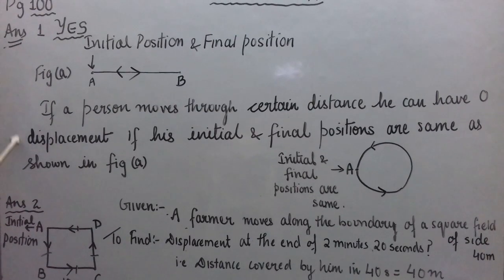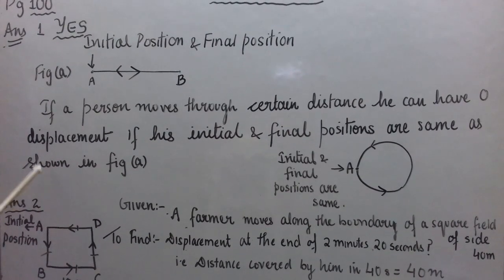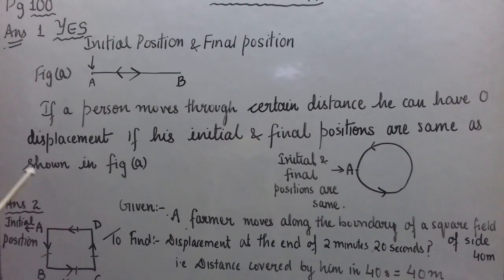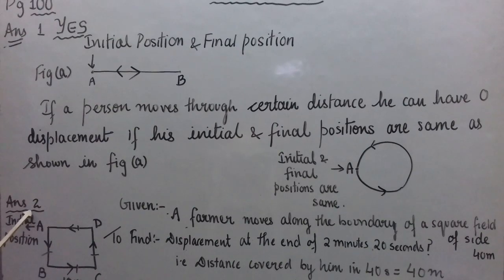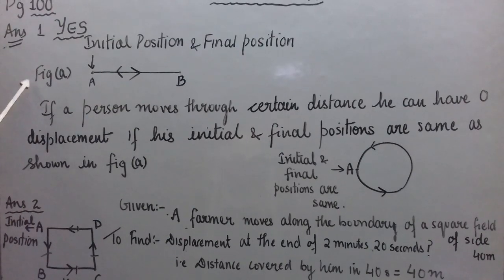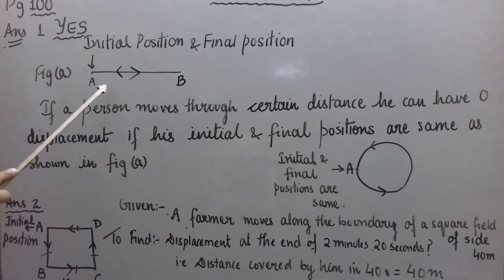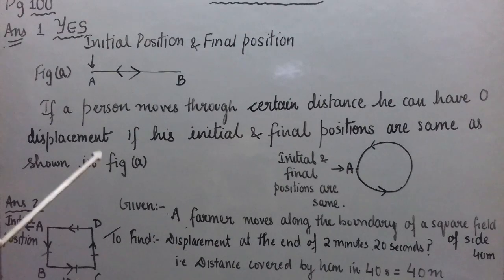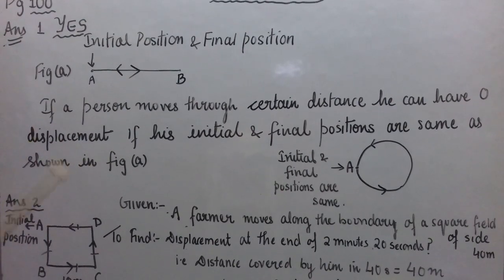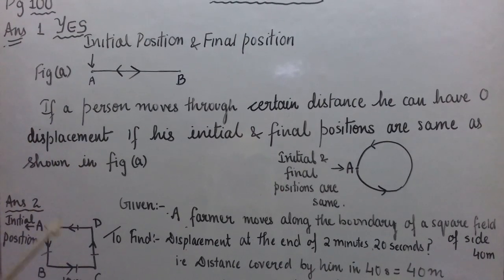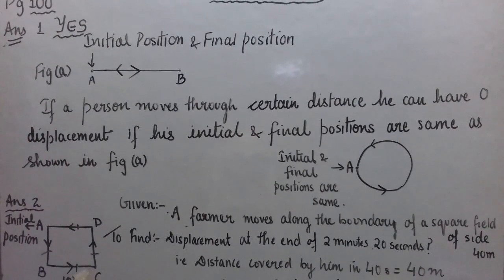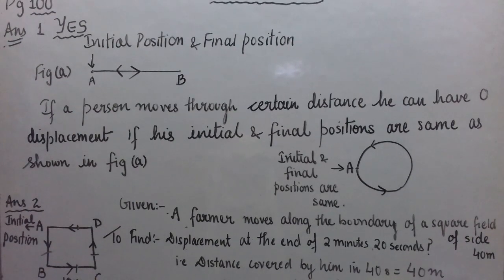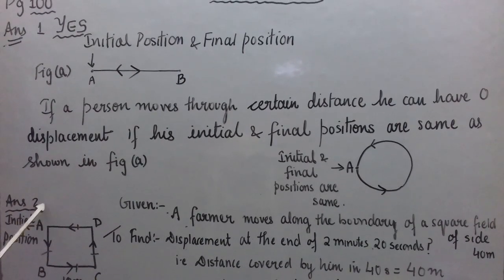I hope this answer is clear. Now let us proceed to the next numerical. Remember, we can show any path — square, rectangular — using arrows to indicate that initial and final positions are same.